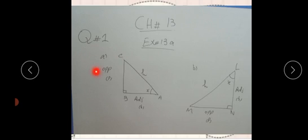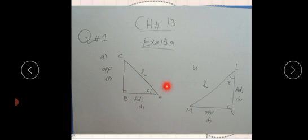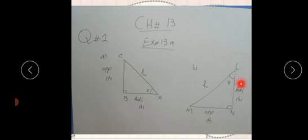Question number one, part A. We have vertices A, B, and C. We have X lying at angle A. What will be the opposite side? Opposite side - we call it perpendicular. We have two angles lying here: right angle B and X. We have our adjacent side, which means base. The right angle's opposite side is always the hypotenuse. For part B: we have the opposite side - perpendicular. We have both angles lying here - right angle B and the X angle. We have the adjacent side. Right angle opposite side is the hypotenuse.